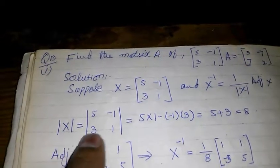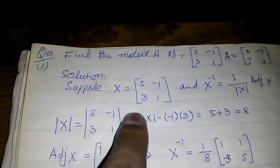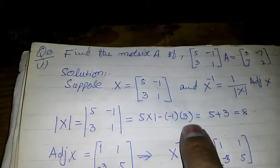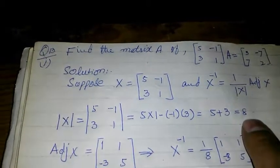Now, the determinant of X equals 5 times 1 minus (-1) times 3, which equals 5 plus 3, which equals 8.